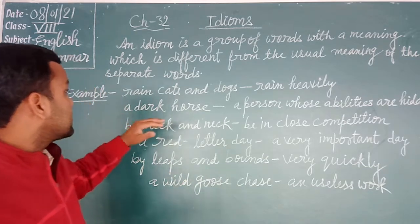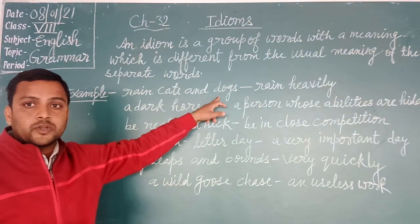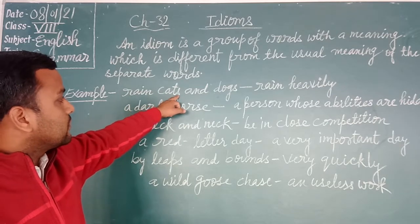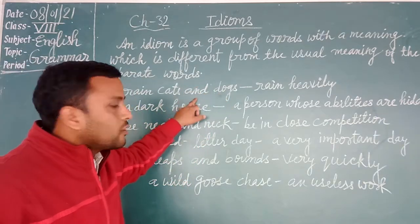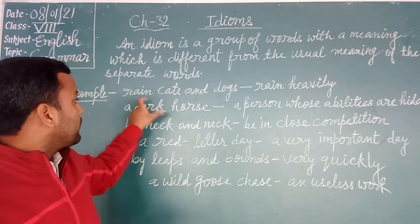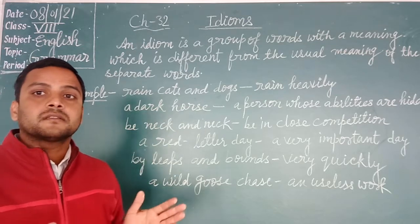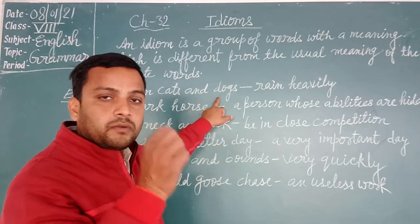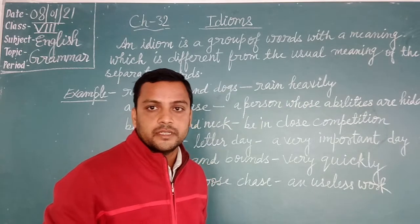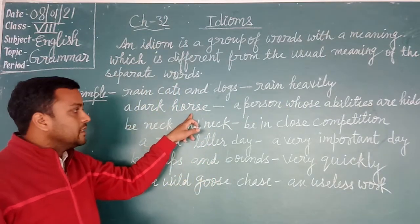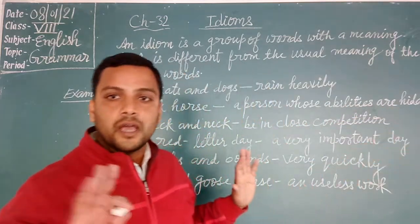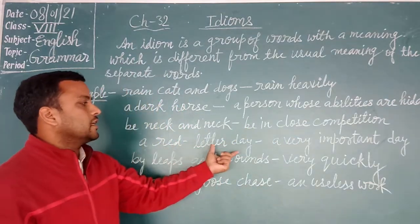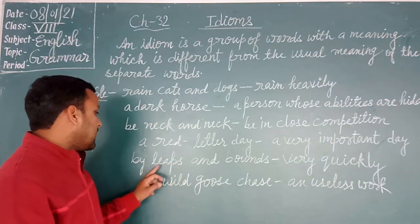For example, 'raining cats and dogs.' Students, you know the meaning of rain — it will be separate. The meaning of cat will be separate, the meaning of cats will be separate, the meaning of dogs will be separate, and the meaning of 'and' will be separate. But when it is used as an idiom, its meaning will be different — there will be a particular meaning. 'Raining cats and dogs' means raining very heavily. 'A dark horse' means a person whose abilities are hidden or unknown. 'Neck and neck' means to be in close competition. 'A red letter day' means a very important day.